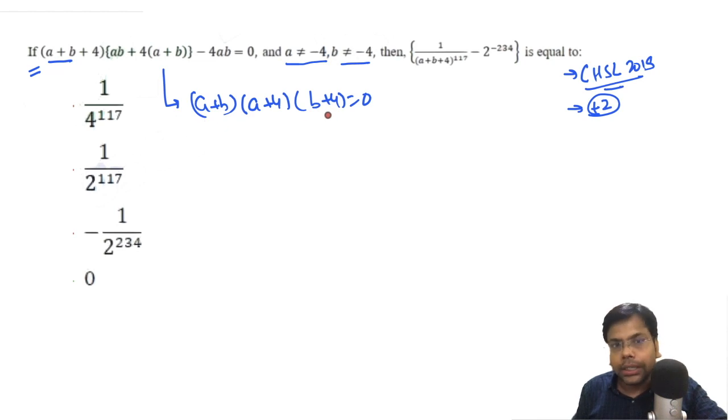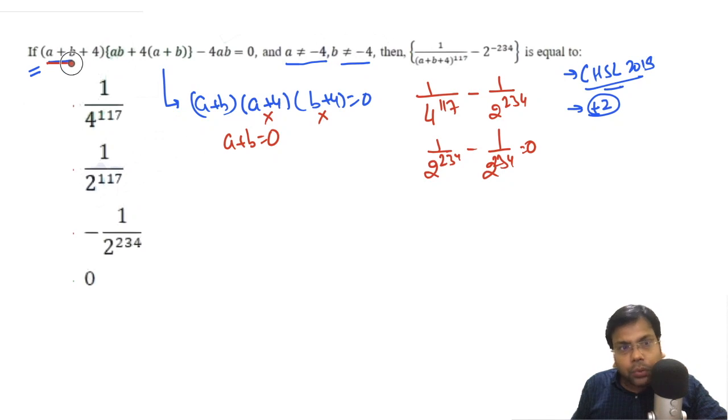a plus 4 and b plus 4 equal to 0. This is not equal to 0, this is not equal to 0, it means a plus b must be 0. But if a plus b is 0, then we have 1 upon 4 raised to power 117 minus 1 upon 2 raised to power 234, which equals 1 upon 2 raised to 234 minus 1 upon 2 raised to 234, and the answer is 0.